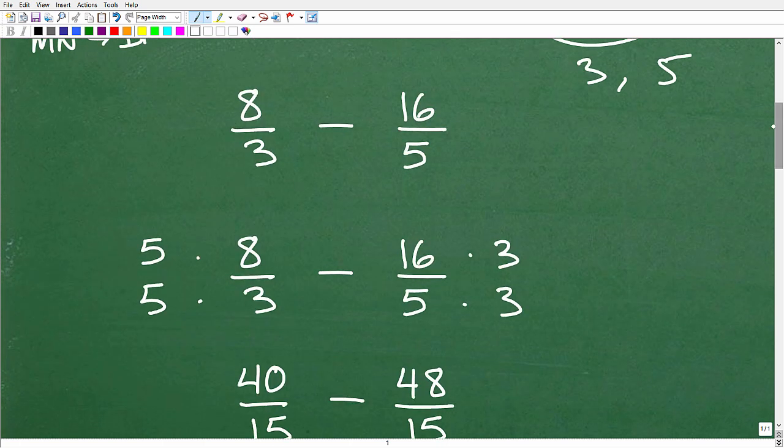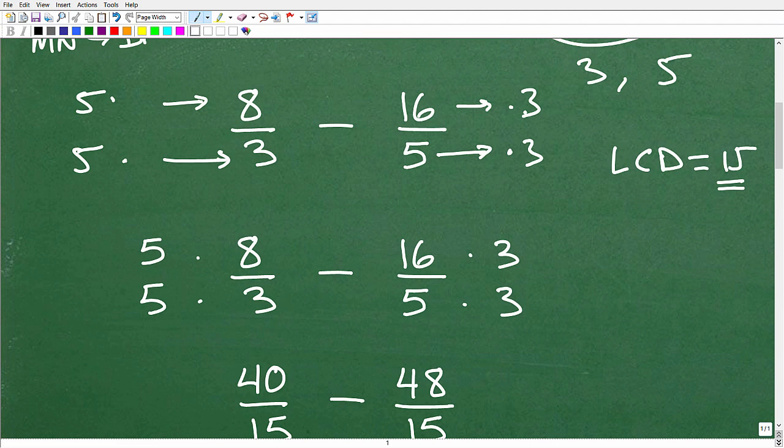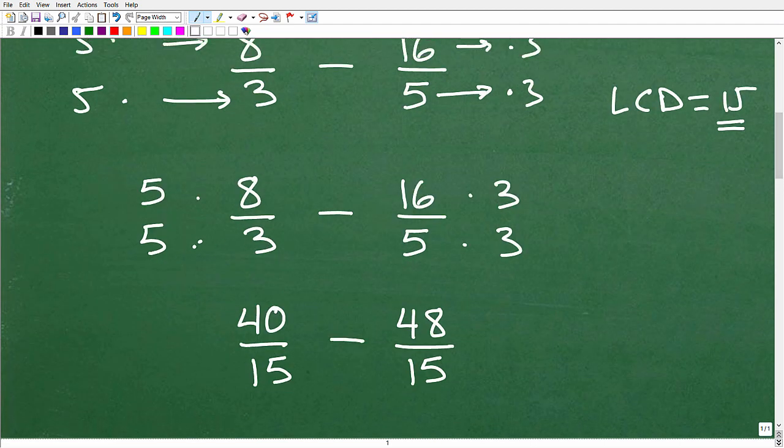At this point, we have 8/3 minus 16 over 5. We know that the LCD is 15. Instead of this denominator being 3 and this denominator being 5, we want to have a common denominator. Our lowest common denominator is 15. So, we have to change each denominator into 15. To change this denominator into 15, I have to multiply by 5. And to change this denominator into 15, I have to multiply it by 3. But if I multiply the denominators by these respective numbers, I also have to multiply the numerator by that same number. So, I don't change the actual value of the problem. I'm going to multiply this denominator by 5 so I can get a 15. But I have to multiply the numerator by 5 over here. Then, I'm going to multiply this denominator by 3 so I can get a 15. But I also now have to multiply this numerator by 3.